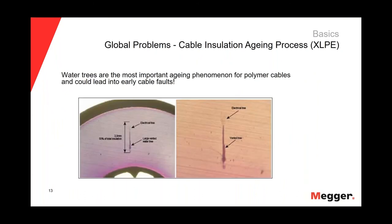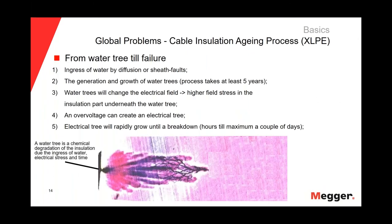In the case of XLPE insulation, the main driver — the most important phenomenon — is water trees. Water trees are developed in the insulation as follows: it all starts with the ingress of water by diffusion or jacket faults. For that reason, it's very important that when we pull the cable, we don't put holes in the jacket, because those perforations will permit the ingress of water into the insulation.